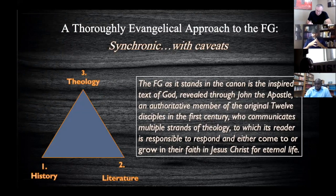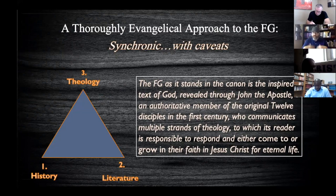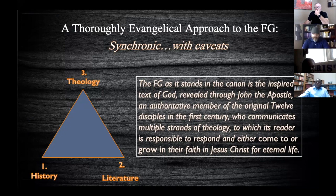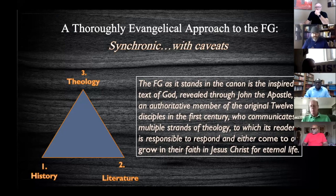Consequently, I believe a thoroughly evangelical approach to the Fourth Gospel is one that takes several features of John for granted or assumes them at the outset, and serves as a modified synchronic reading of the text — synchronic with caveats. With that in mind, I phrase it this way and offer this to you: the Fourth Gospel, as it stands in the canon, is the inspired text of God revealed through John the Apostle, an authoritative member of the original 12 disciples in the first century, who communicates multiple strands of theology to which its reader is responsible to respond and either come to or grow in their faith in Jesus Christ for eternal life.